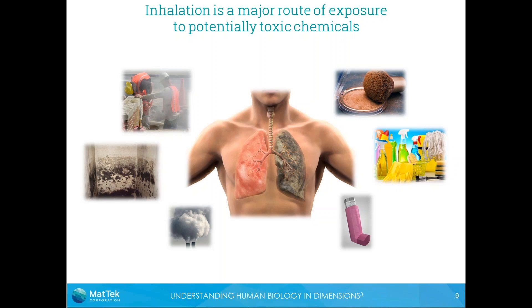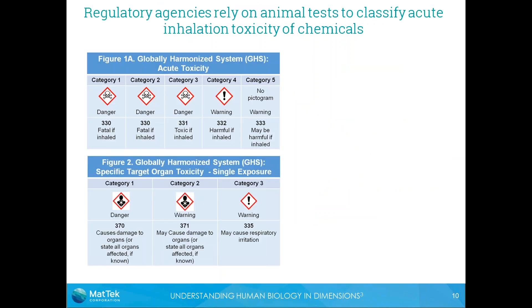Different regulatory agencies have different schemes for classifying acute inhalation toxicity. Shown here is the Globally Harmonized System, or GHS. There is also an EPA system for classifying these chemicals, but I'm going to be focusing on the GHS system for this talk.